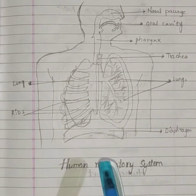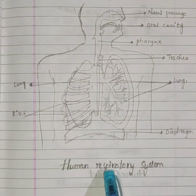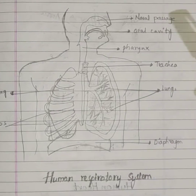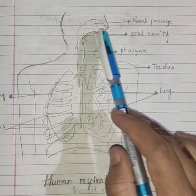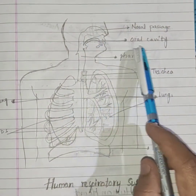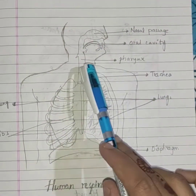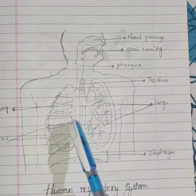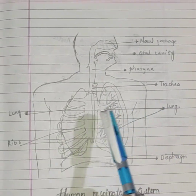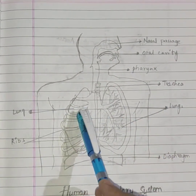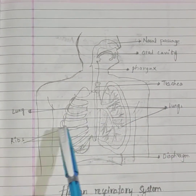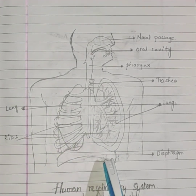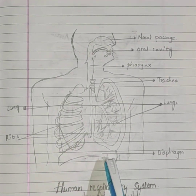Our first diagram is the human respiratory system. Here this is the nasal passage and this is the oral cavity, pharynx, trachea, lungs. This is also a lung, ribs. These are ribs and this is the diaphragm.